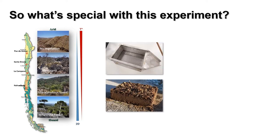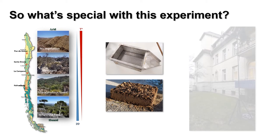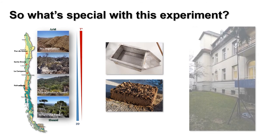For this purpose, we will collect undisturbed soil monoliths in four national parks distributed along 1500 kilometers of the coastal range in Chile, covering four different climatic conditions, and including soils with and without bio-crust. Then we will apply a precipitation of 45 millimeters per hour for half an hour.